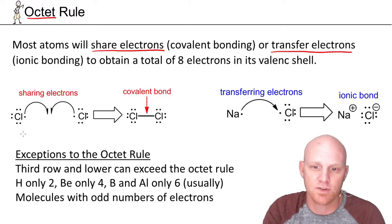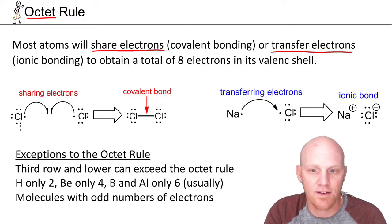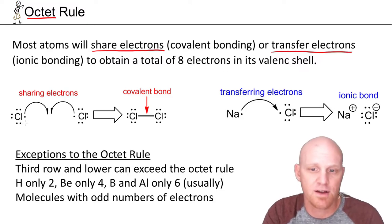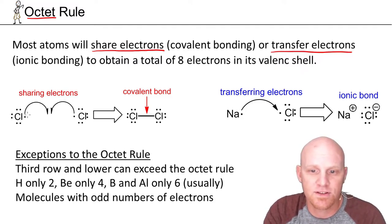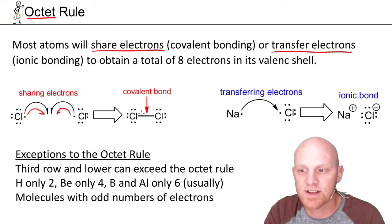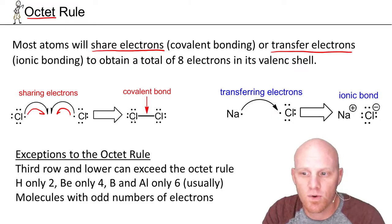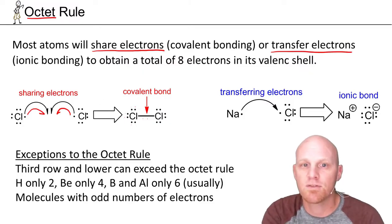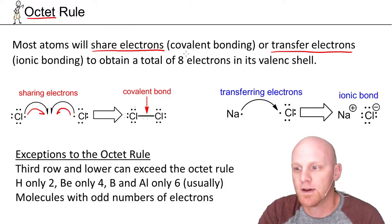They want to have eight electrons. If we take a look at chlorine, chlorine's got seven valence electrons — it's only the valence electrons that show up in a typical Lewis structure. What each chlorine does is share one of those valence electrons to form a bond. This line represents two electrons. Each chlorine can count six of its own plus two shared — that's eight around each. By sharing electrons, they both now have eight electrons around them.